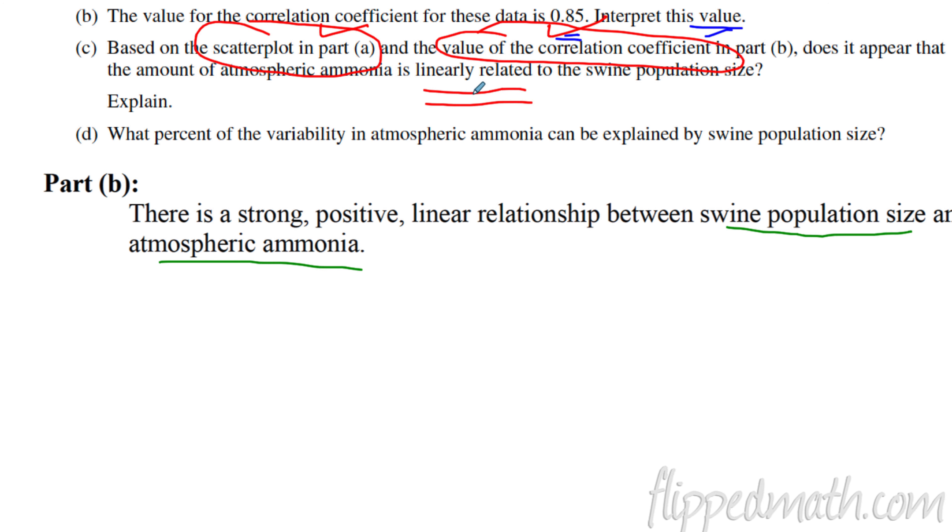So the last part of this question, what percent of variability in atmospheric ammonia can be explained by swine population size? So I've tried to train my students. If you have some percent of variation or variability or change in the Y variable, and then they use the words that can be explained by, and then the X variable follows. This is clearly a situation where they want you to talk about R squared. So you take 0.85 and you square it, and that's going to give you 0.72. So the question asked, what percent? So you can say 0.72. You can say 72% or just 72. I would say 72% is the best answer. And notice that if you just write R squared, that is not sufficient. If you just write the term R squared, you have to say 72%. And I would go a step further and then write it in context. 72% of the variability in atmospheric ammonia can be explained by swine population size. All you have to do is copy that down, and you're good to go.